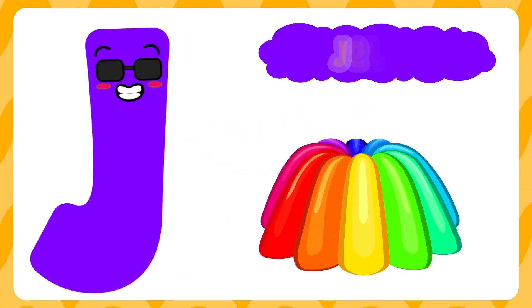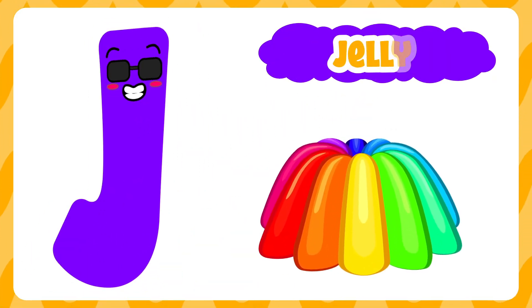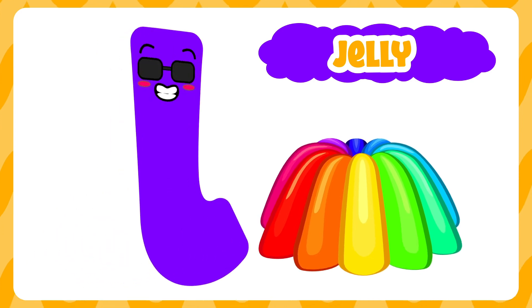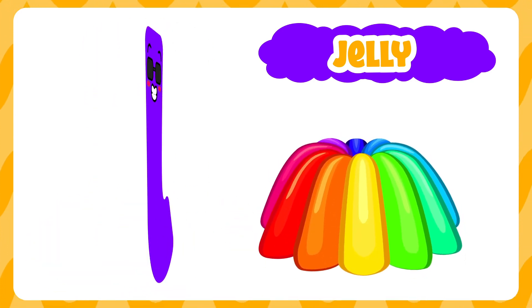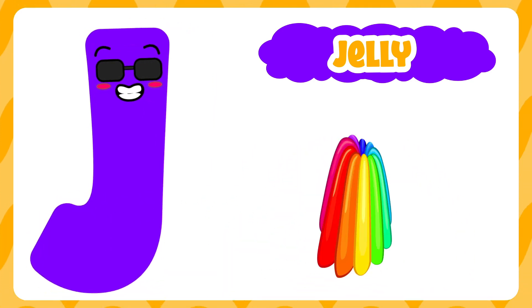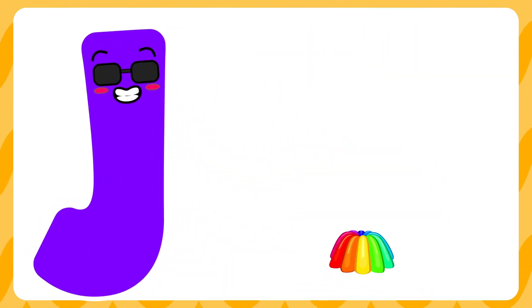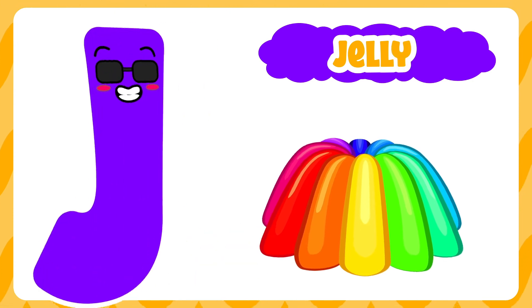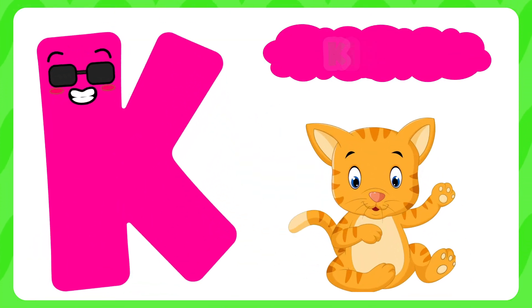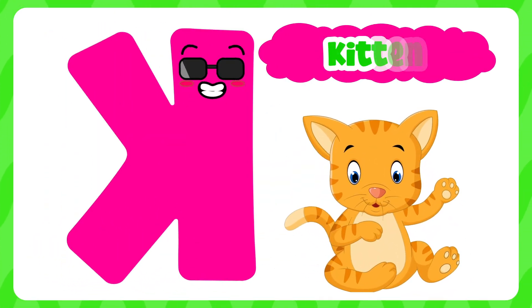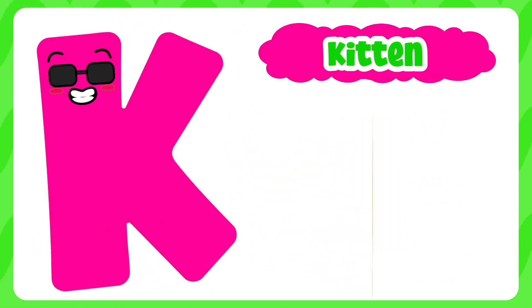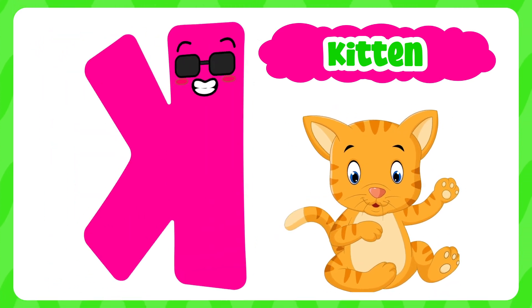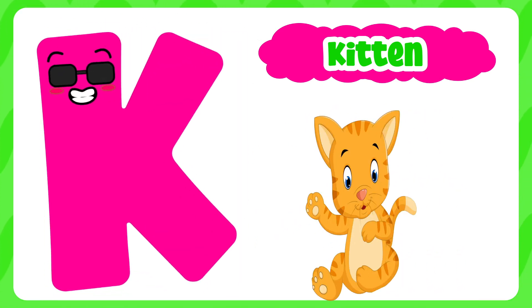J is for jelly. Ju, ju, jelly. J is for jelly. Ju, ju. K is for kitten. Cu, cu, kitten. K is for kitten. Cu, cu.